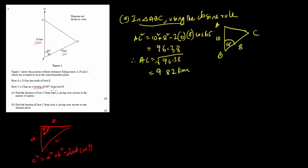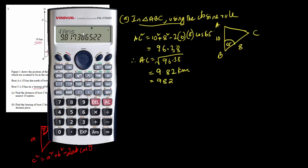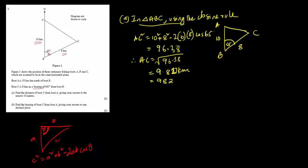This is in kilometres. Now for the answer format — let's convert to metres, multiplying by 1,000. So 9.82 km becomes 9,817 metres. To the nearest 10 metres, that would be 9,820 metres. So AC is 9,820 metres.